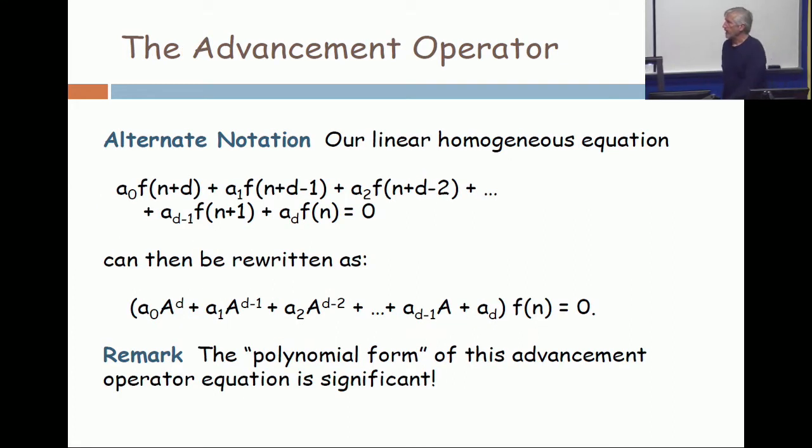All right, then we introduced the advancement operator, and we rewrote the linear homogeneous equation in the form of a polynomial in the advancement operator, operating on a function f(n). So we call that an advancement operator equation.